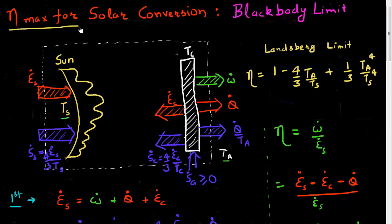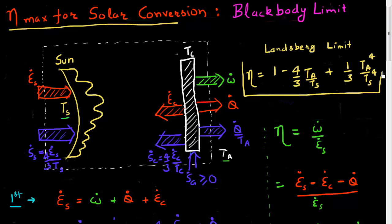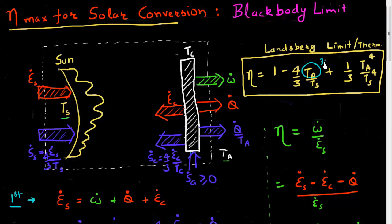I've spent quite a few videos talking about maximum efficiency for solar energy conversion. In the last few videos, I derived what is called the Landsberg limit for solar energy conversion, given by this formula. It's a very important limit — sometimes also known as the thermodynamic limit of solar energy conversion. Giving this formula some numbers, with an ambient temperature of 300 Kelvin and a sun temperature of 6,000 Kelvin, this efficiency turns out to be approximately 93.3%.